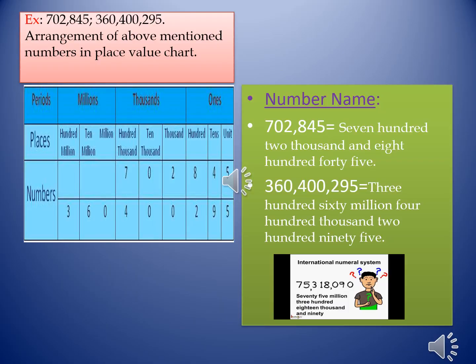To write a numeral in the international system, beginning from the right, commas are put after every three digits. For example, 702845 — we can insert the comma after every three digits.